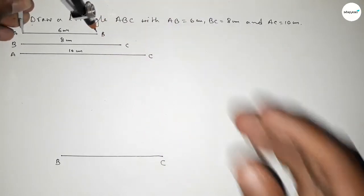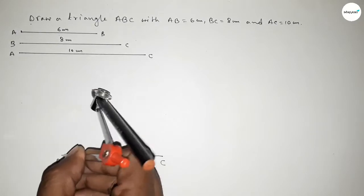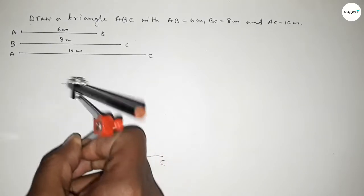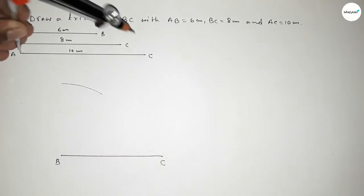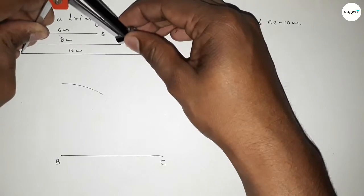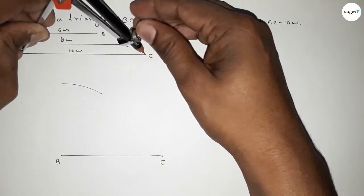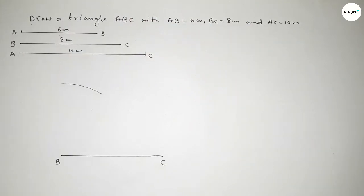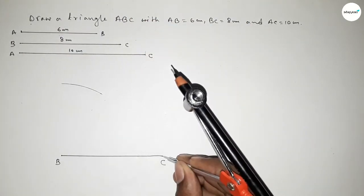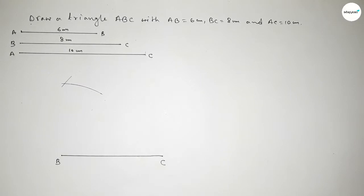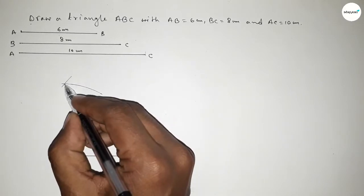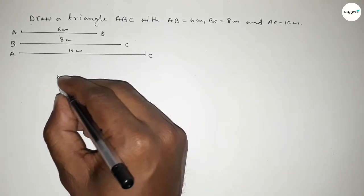Putting the compass on point B and drawing an arc. Now taking the length AC equal to 10 centimeters using a compass, putting the compass on point C and cutting here, so both curves intersect at a point.